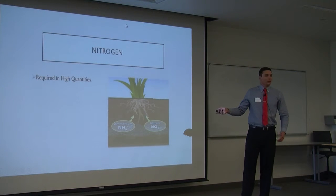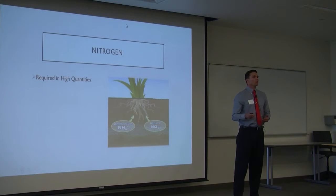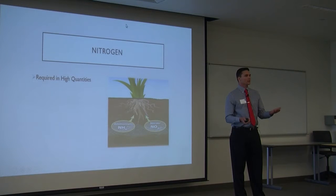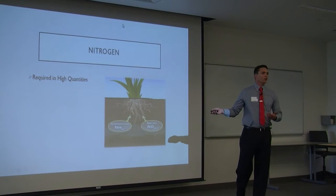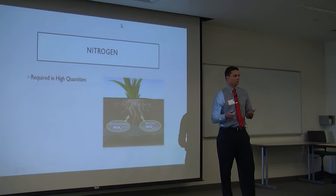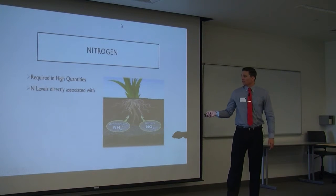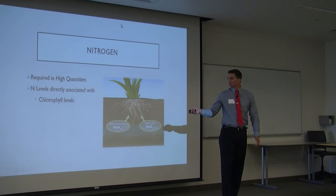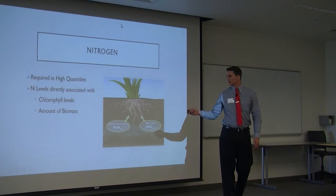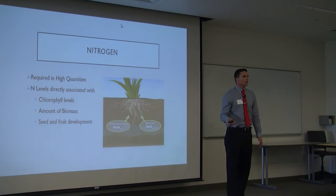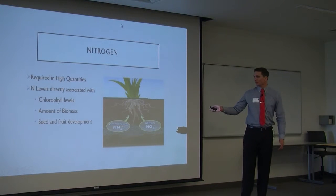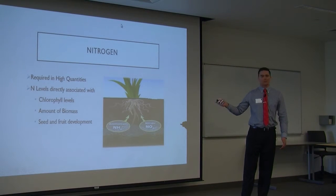Nitrogen is a very important nutrient within plants. They use this in sexual reproduction, DNA synthesis, and it is required in very high quantities and is a limiting factor for plants. Nitrogen level is directly associated with chlorophyll levels, biomass levels, and seed and fruit development. So as the level of nitrogen increases, so does the amount of chlorophyll, amount of biomass, and seed and fruit development.